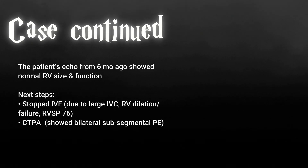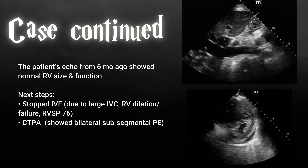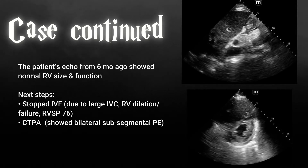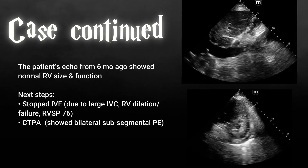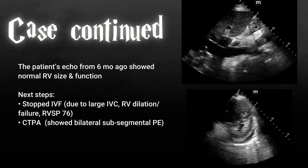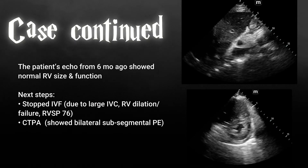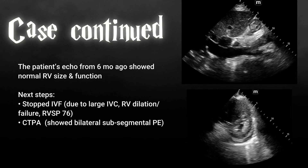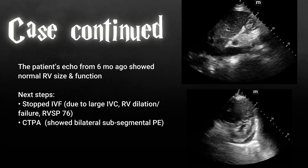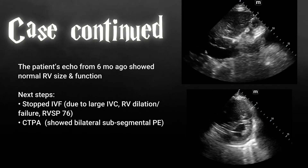We stopped the IV fluids due to the patient's large IVC, RV dilation, RV failure, and an RV SP of 76. The patient also underwent a CT pulmonary angiogram, which is controversial because of her creatinine, but it did show bilateral subsegmental pulmonary emboli.